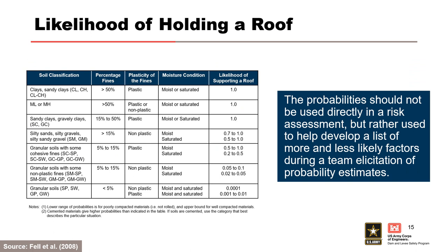As previously mentioned, the presence of a structure or hard layer and soil properties are the primary factors to consider in roof formation. This table from Fell et al., 2008, summarizes the likelihood of holding a roof for various materials. Soils with a fines content greater than 15% are much more likely to support a roof than soils with a fines content less than 15%. The probabilities should not be used directly in a risk assessment, but rather used to help develop a list of more and less likely factors during a team elicitation of probability estimates.